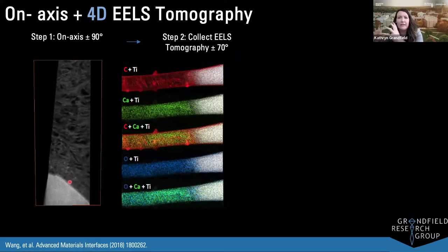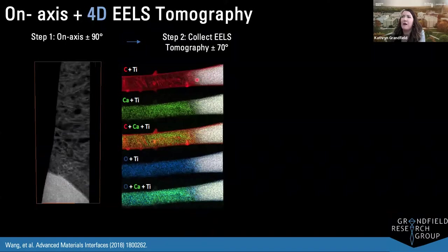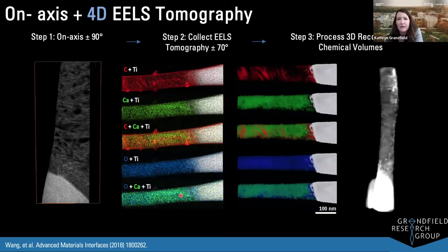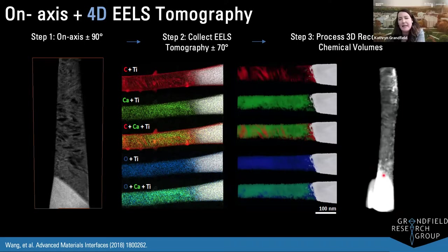At every angle we rotate to in the microscope, we now take an EELS spectrum image — collecting not just an image but elemental information. This enables us to create images representative of the elements in our material: carbon representing collagen fibrils, calcium representing bone tissue, titanium for the implant, and so forth. Taking all these spectrum images collected over a large number of angles and combining them with the same reconstruction principles, we create a three-dimensional structure of our bone-implant interface, isolating in 3D where collagen fibrils and hydroxyapatite are.